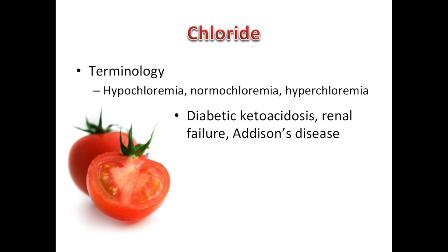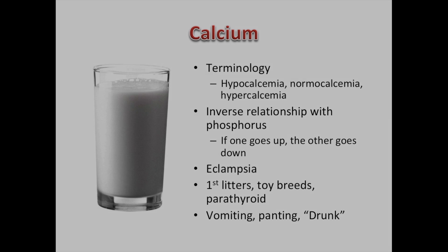For chloride, the terminology is hypochloremia, normal chloremia, and hyperchloremia. Chloride is evaluated in conditions like diabetic ketoacidosis, renal failure, and Addison's disease — all of which can affect chloride levels. It's not typically used alone to make a diagnosis; rather, it's interpreted alongside the other electrolytes and blood chemistry results.